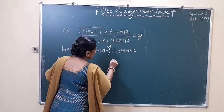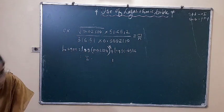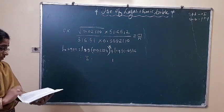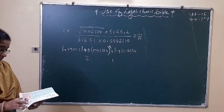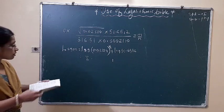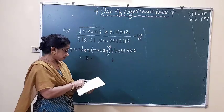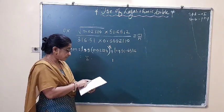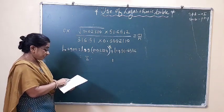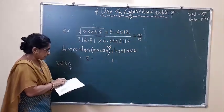Bar 2. Now find the mantissa: in the log table, look up row 23. In column 1 we get 3, 6, 3, 6. The mean difference in column 4 gives 8. So we get 3, 6, 3, 6 with mean difference 8.